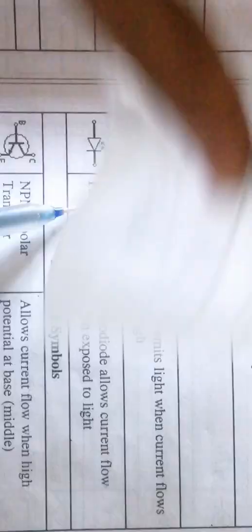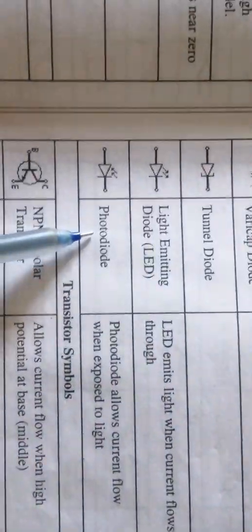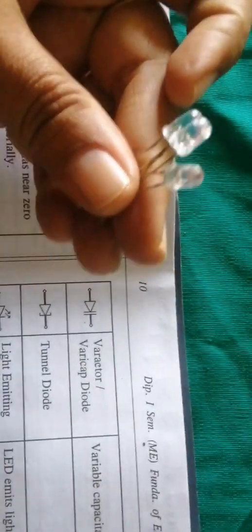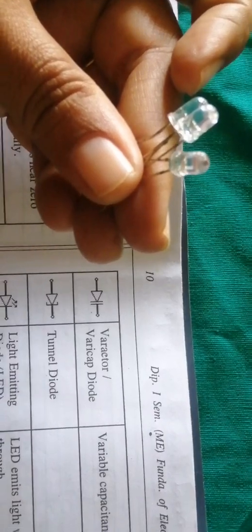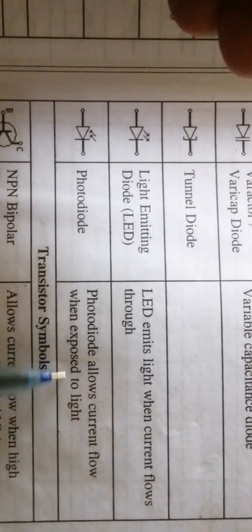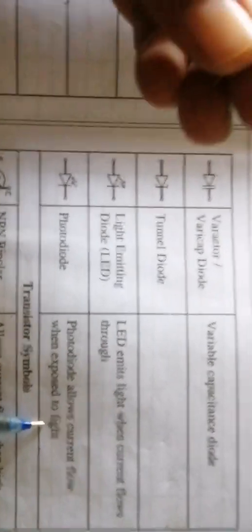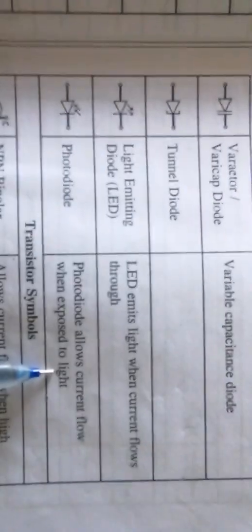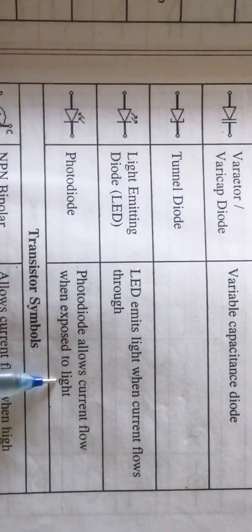A photodiode looks similar to a normal diode or LED, but its function is different: it allows current to flow only when it is exposed to light.